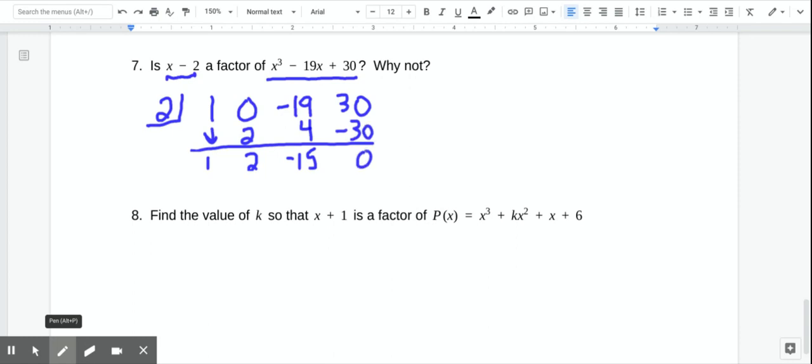So notice that my remainder is 0. So that means that x minus 2 goes in evenly because there's no remainder. So we would say, yes, x minus 2 is a factor.